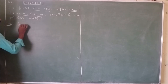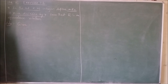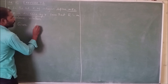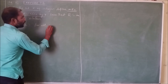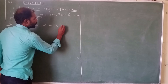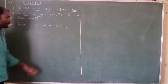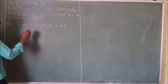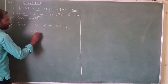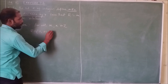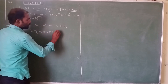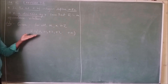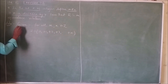So, given data: m and n are integers, for all m, n belonging to Z. Z is the set of all integers. The integers range from 0, plus or minus 1, plus or minus 2, plus or minus 3, and so on up to plus or minus infinity. This is the set of all integers — that is the given data.